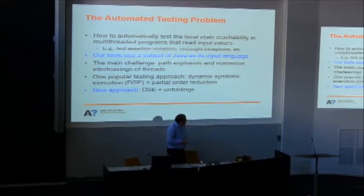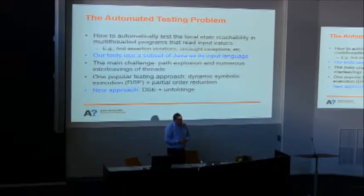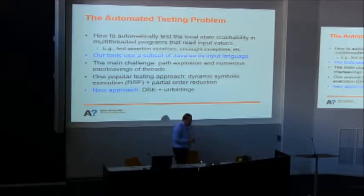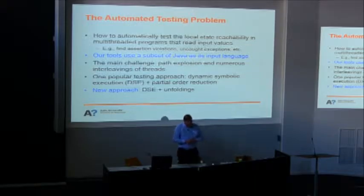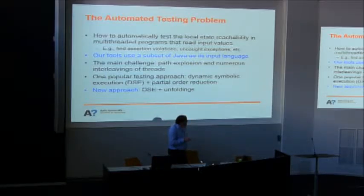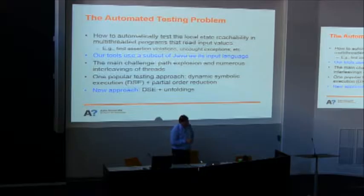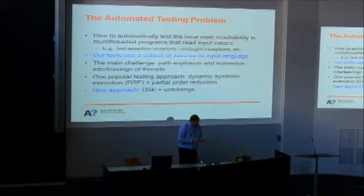One popular testing approach is dynamic symbolic execution, which Tom talked about. I'll give a quick recap. You can also include partial order reduction techniques — methods for multi-threaded programs that minimize the number of test cases needed while still determining whether a particular line of code is reachable. The new approach I'll discuss was published two years ago at ASE 2012, employing dynamic symbolic execution with a technique called unfoldings.